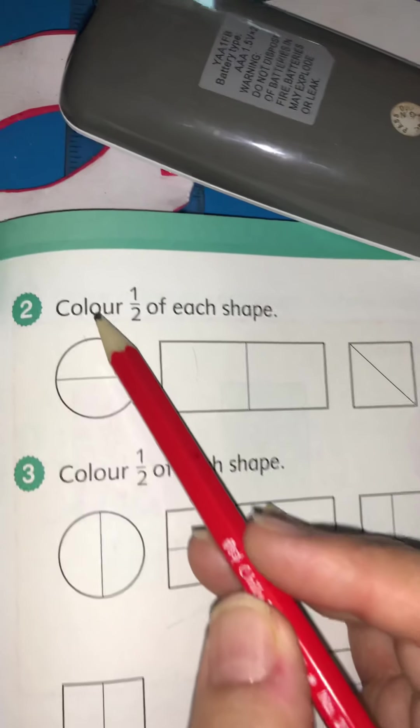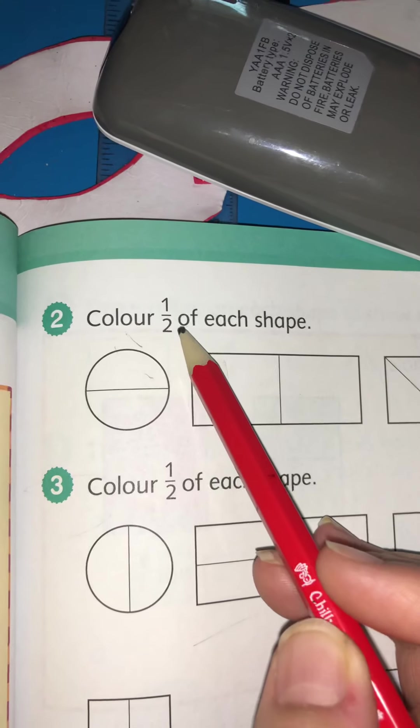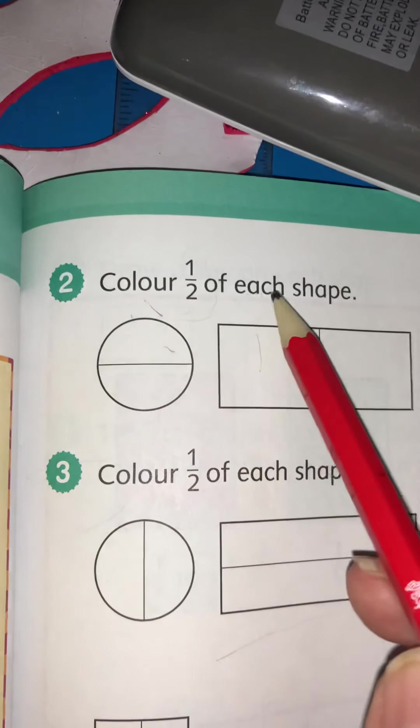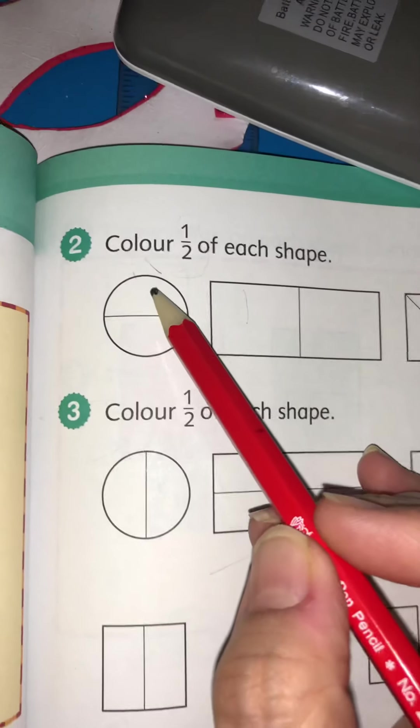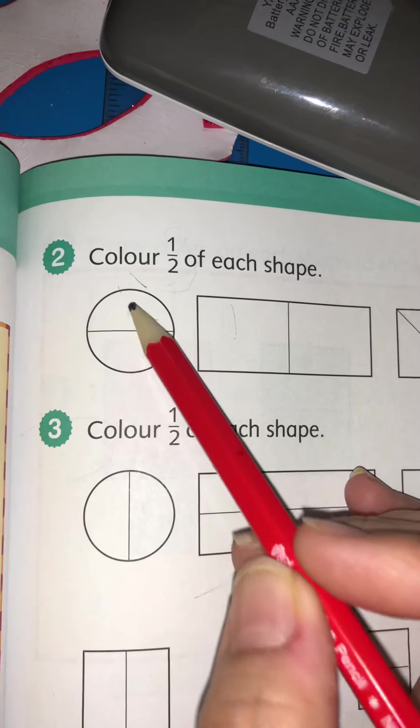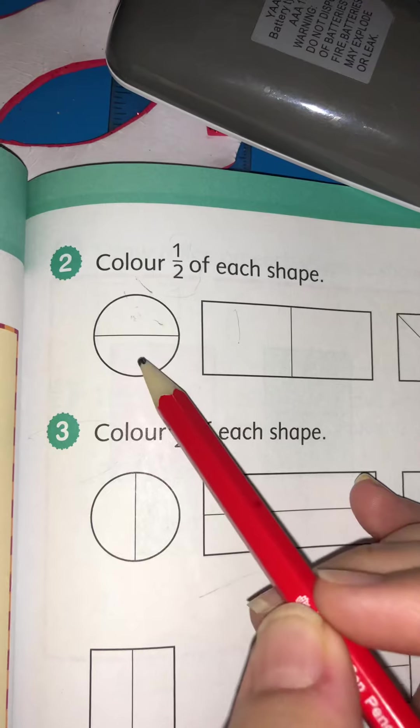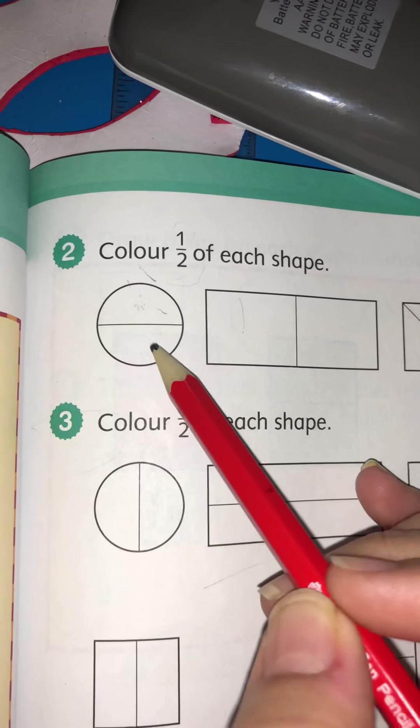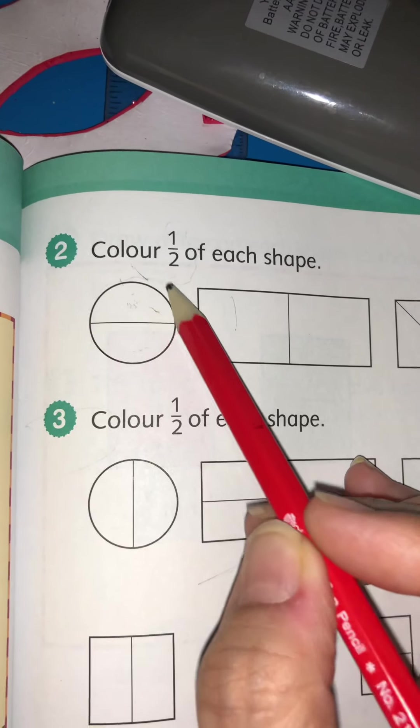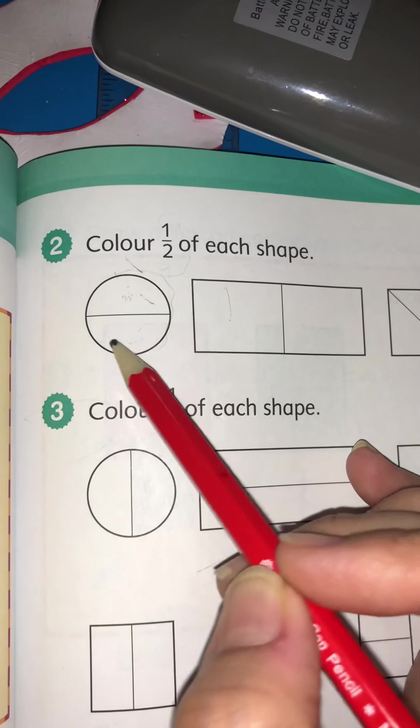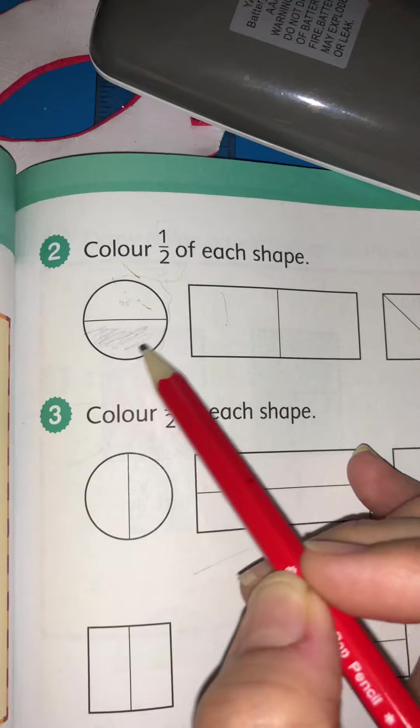Now question number 2: Color 1 over 2. As I told you, it means half. Color half of each shape. So they have divided the circle into two parts and they are both equally divided. So you can see that this is half and this is half. This is whole and this is half and this is half. So you have to color only half part, so I will color like this.